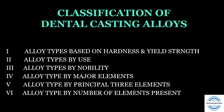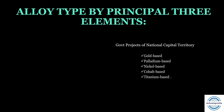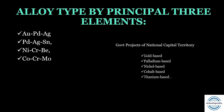The fifth classification is alloy types by the principle three elements present in the alloy. Using the same five categories from the previous classification: gold-based — gold, palladium, silver; palladium-based — palladium, silver, tin; nickel-based — nickel, chromium, beryllium; cobalt-based — cobalt, chromium, molybdenum; titanium-based — titanium, aluminium, vanadium. These are the five categories based on the principle three elements.